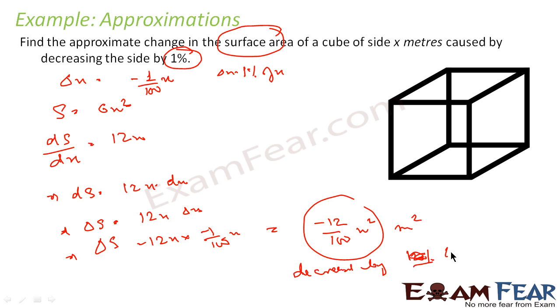So I can see that it decreased by 12 by 100 into x squared. And this if you observe carefully is nothing but 2 by 100 into 6x squared, or you can say 2 by 100 into S. So you can say that this is nothing but 2% of surface area. You can write 12 by 100 x squared also or you can say 2% of surface area.